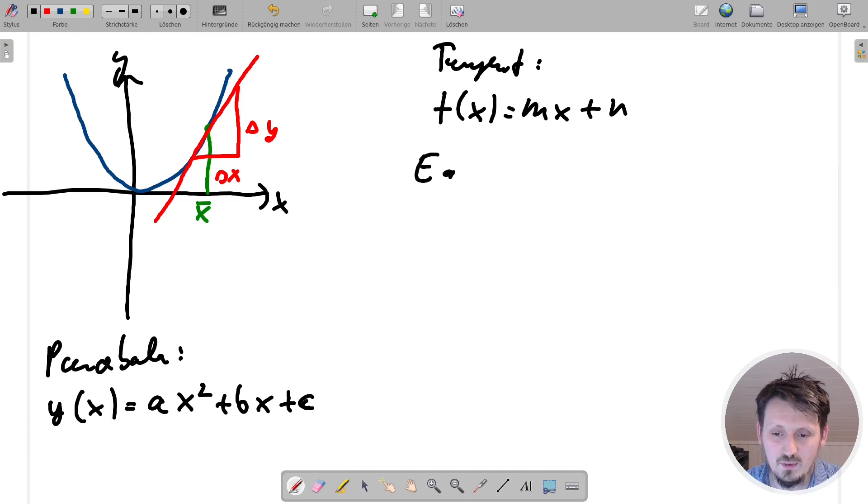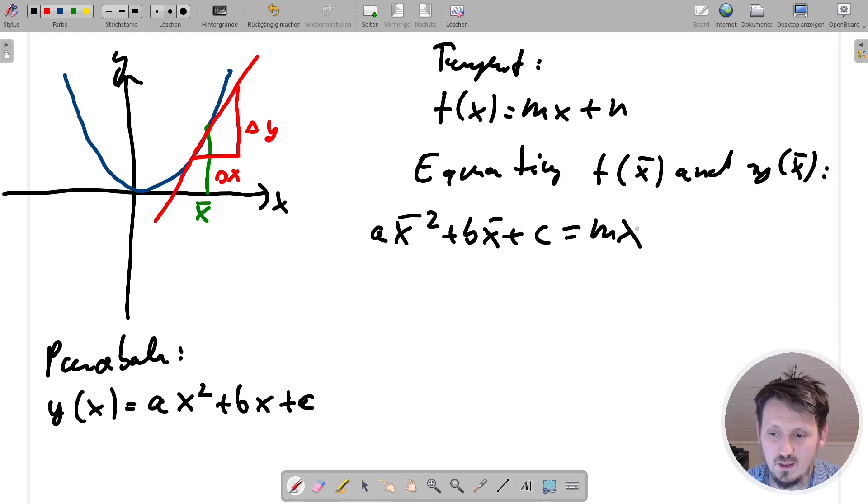So what we will do now, we will equate these two functions t of x and y of x. So but what we can do now here, we can write at the position at the position x bar, of course, as I said before. So now we can write here a x bar square plus b x bar plus c. And this is then equal to m x bar plus n. So here nothing happens except equating these two.